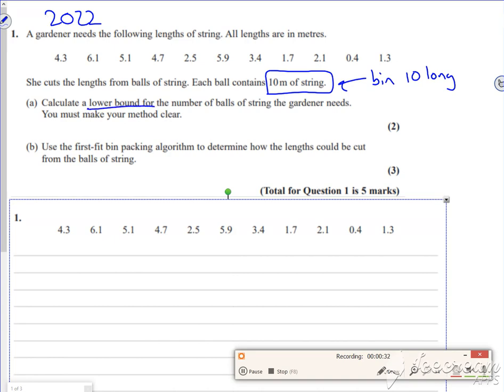It says calculate the lower bound. The lower bound is just add them up and divide by the length of the bin. So if I add them all up for part A, I get 37.5. I divide by the length of the bin, not the number of people or bits of string. So I'm dividing by 10. That's 3.75 bins that I need. So actually I need 4 bins, 4 complete bins. So that's the first bit done.